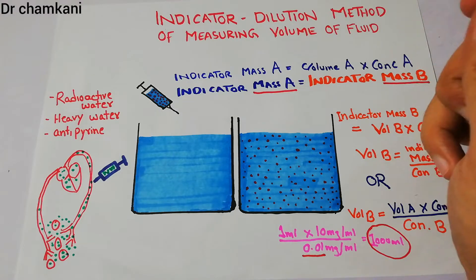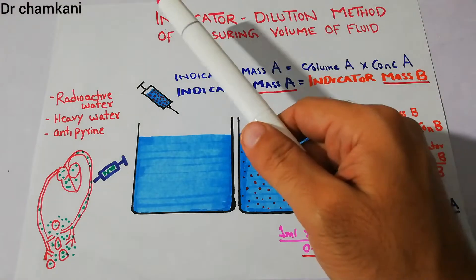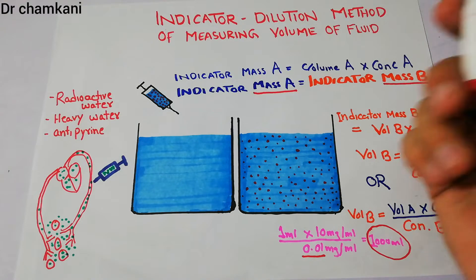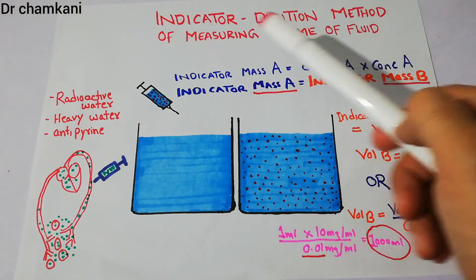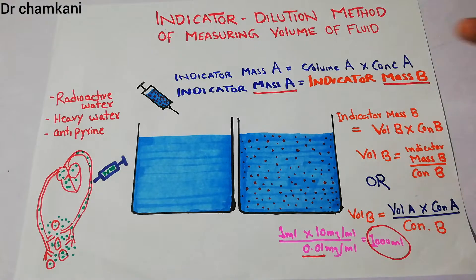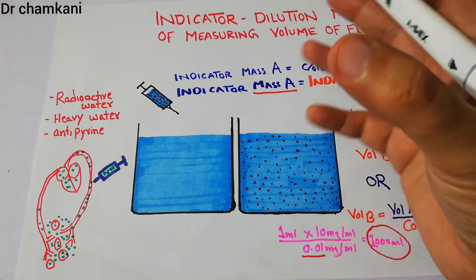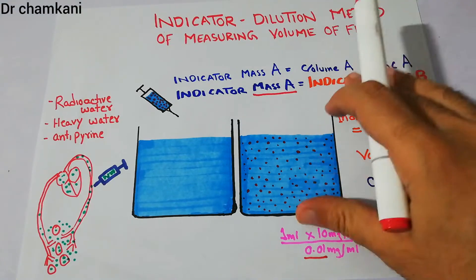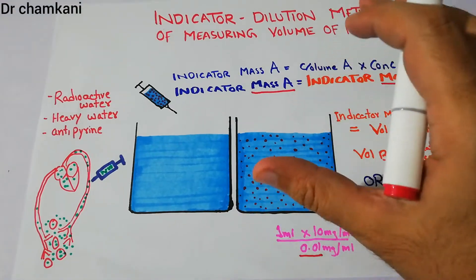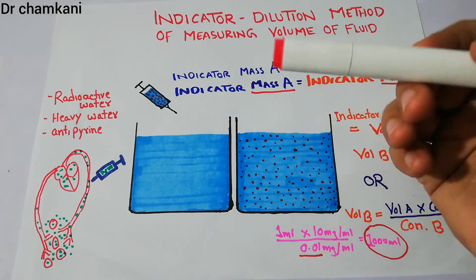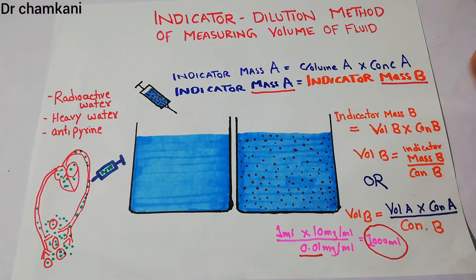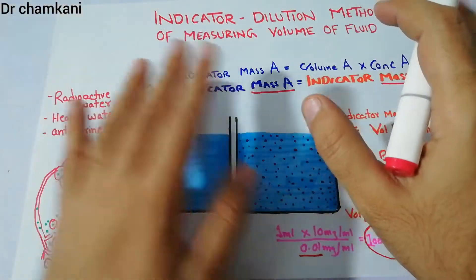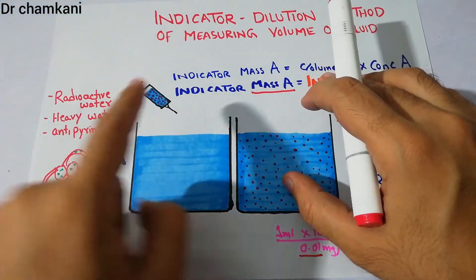In this lecture we are going to talk about the measurement of total body water using the indicator dilution method. In our last lecture we discussed the indicator dilution method for measuring fluid volume — how it can be used to measure the volume of any fluid. This lecture is just like the previous one, but we are going to mention its use in the human body.